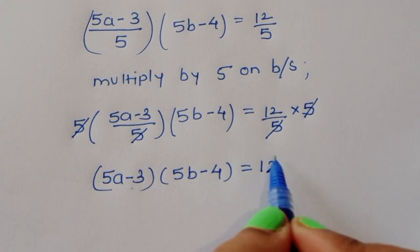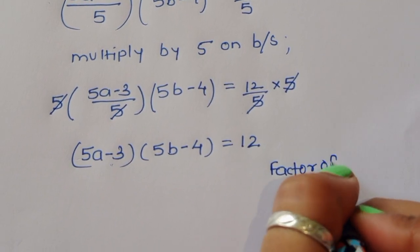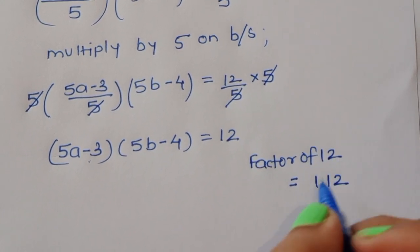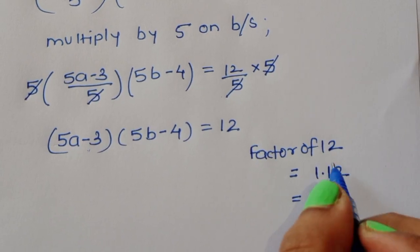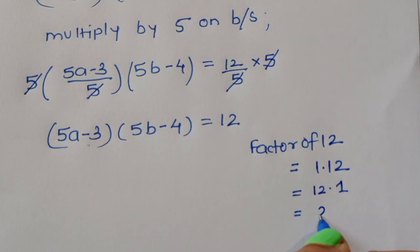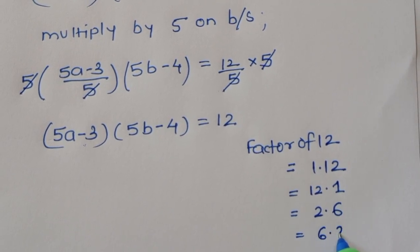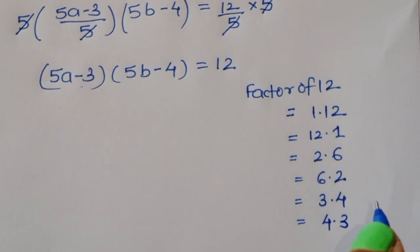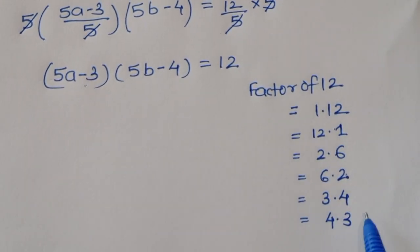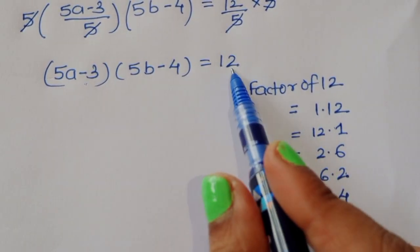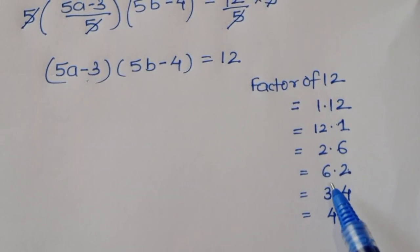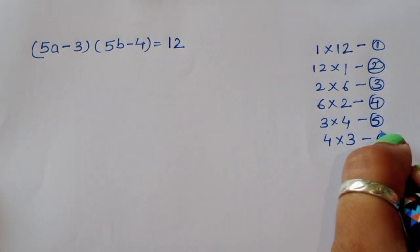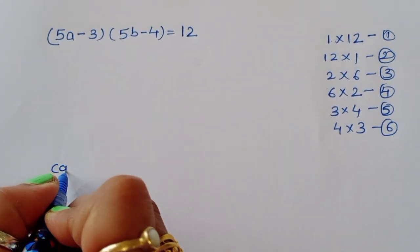The factor pairs of 12 are: 1×12, 12×1, 2×6, 6×2, 3×4, and 4×3 — giving us 6 cases to check. Since a and b must be integers, we need 5a-3 and 5b-4 to also be integers.